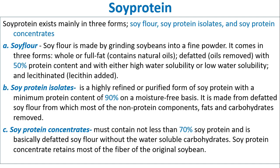Soy protein exists mainly in three forms: soy flour, soy protein isolates and soy protein concentrates. Soy flour is made by grinding soybeans into a fine powder. It comes in three forms: full fat (contains natural oils), defatted (with 50% protein content, either high or low water solubility), and lecithinated (with lecithin added).